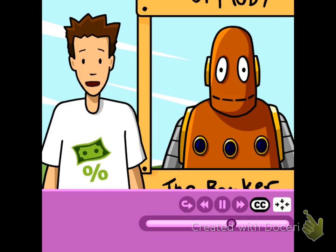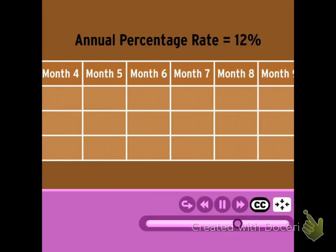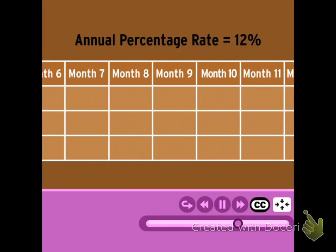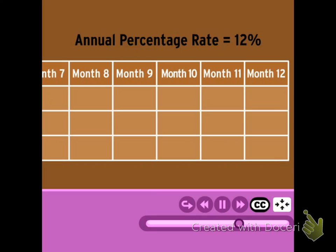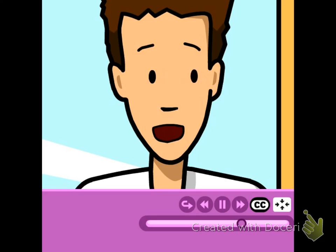If you decided to offer monthly compound interest, you wouldn't pay 12% interest every month. You'd be giving cash away hand over fist and your bank wouldn't stay in business. Instead, you'd break things down into 12 monthly installments of 1% each. 1% interest every month doesn't sound great, but at the end of the year I'll have more money than if you gave me 12% annual interest.